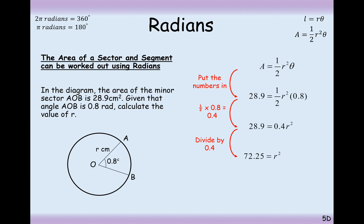r squared is going to equal 72.25. Square root that and we get 8.5 centimetres.